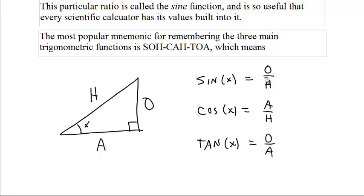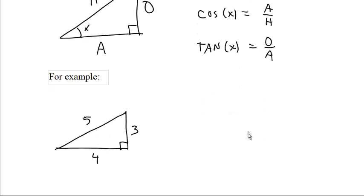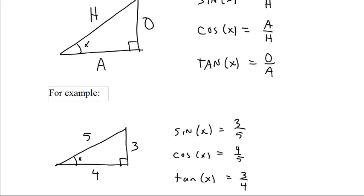Now, a quick example. If you have everybody's favorite 3-4-5 right triangle, and the angle and the small angle over there is x, then the sine of that x is 3 over 5, opposite over hypotenuse. The cosine is 4 over 5, adjacent over hypotenuse, and the tangent is 3 fourths.